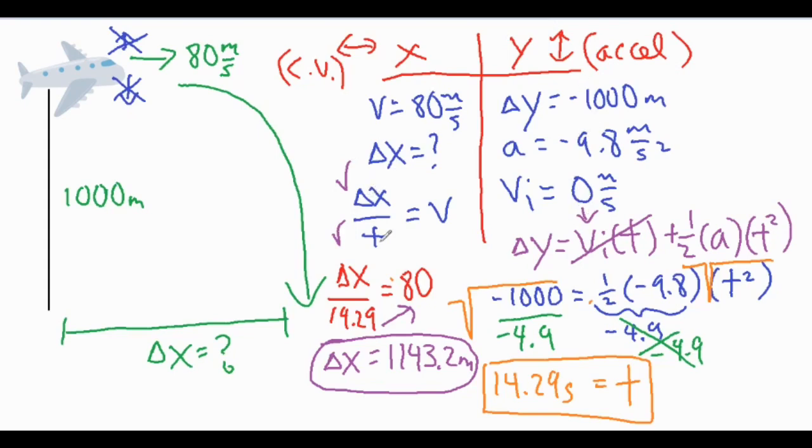And then once you have the delta x and the t, you just divide those two. And then that would give you the velocity, which would be the initial velocity of the package, which is also the initial velocity of the plane. So if you're given that variation, it's going to be a very similar setup and calculation, just one little difference at the very end.